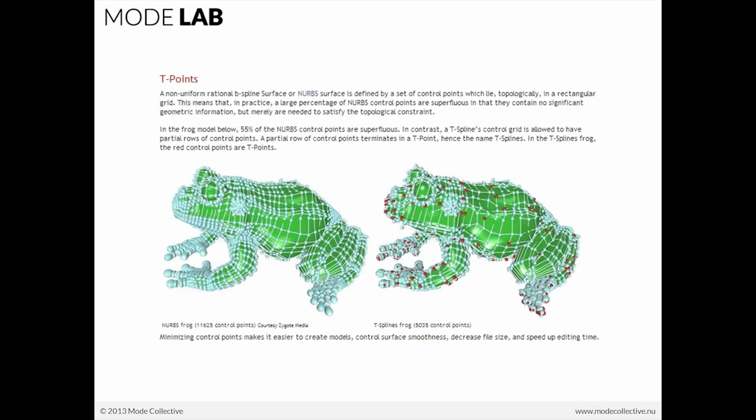So T-Points, you can see here in this model of a frog that in a NURBS surface model on the left, this frog has 11,625 control points. Now on the right, the same model, or variation on that model in T-Splines, only has 5,035 control points. The reason why this is really important is that it minimizes the number of control points, making it easier to create models, control surface smoothness, as well as decrease the file size and speed of editing time.